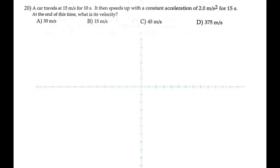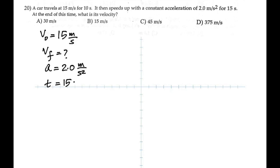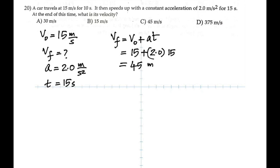The last question: a car travels at 15 m/s for 10 seconds, then speeds up with constant acceleration of 2 m/s² for 15 seconds. What is its velocity at the end? Initial velocity = 15 m/s, acceleration = 2.0 m/s², time = 15 s. Using VF = V₀ + AT: 15 + 2 × 15 = 45 m/s. I hope this has been useful — please post your comments and like the video to help your friends get good grades in physics.